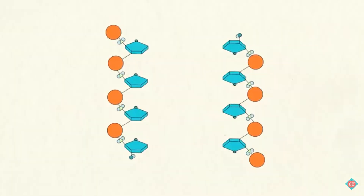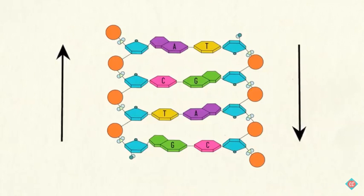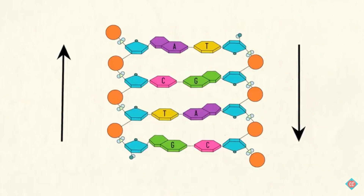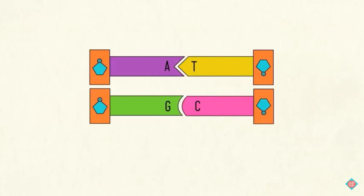The double helix is made of two complementary DNA molecules running anti-parallel to each other. This means that the molecules are arranged parallelly but run in opposite directions, as you can see here. The two DNA molecules are held together by hydrogen bonds formed between the nitrogenous bases. Adenine only forms bonds with thymine, while guanine only forms bonds with cytosine. This is only in DNA, of course, because thymine is only found in DNA.